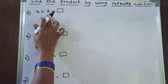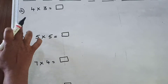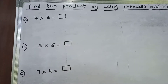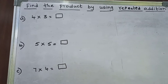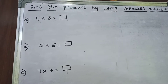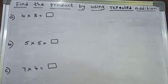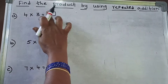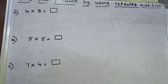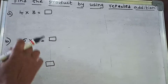So now, 4 threes are — 4 threes are. You have to find the product. If you know your tables, 4 threes are 12, so you know it directly. But here they are asking you to find the product by using repeated addition.